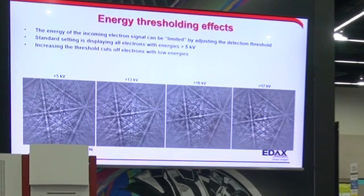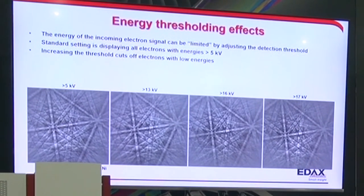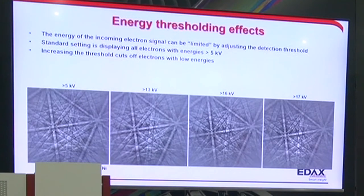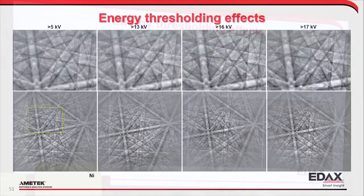Another thing you can do is look at thresholding for pixel detection — telling the software to remove the low-energy electrons. On the left are all electrons with more than 5 kV energy; on the right, anything larger than 17 kV. The difference is not as big as initially expected. Zooming in a little bit, there are a few places where the 17 kV gets a little bit sharper, but it's not much.